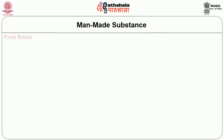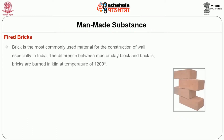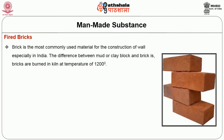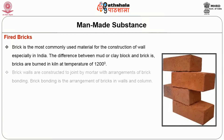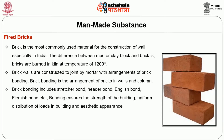Next we will see man-made substances. The first is fired bricks. Brick is the most commonly used material for wall construction, especially in India. The difference between mud or clay blocks and bricks is that bricks are burnt in a kiln at a temperature of 1200 degrees centigrade. Brick walls are constructed by joining with mortar using arrangements of brick bonding. Brick bonding is the arrangement of bricks in walls and columns, and it includes stretcher bond, header bond, English bond and Flemish bond. Bonding ensures strength of the building, uniform distribution of loads, and aesthetic appearance.